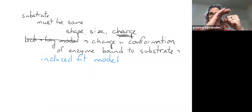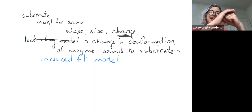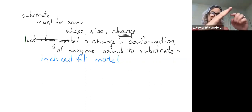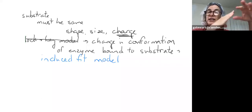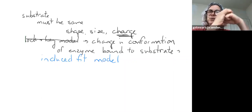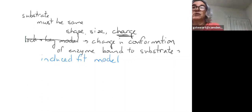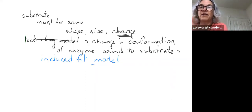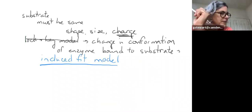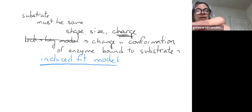Think of it like your fist and your other hand: the other hand is the enzyme and the fist is the substrate. When the substrate binds in the active site, the enzyme actually closes around it — that's what we mean by induced fit. It slightly changes shape to fit really tightly around the substrate so that it can do the chemistry.